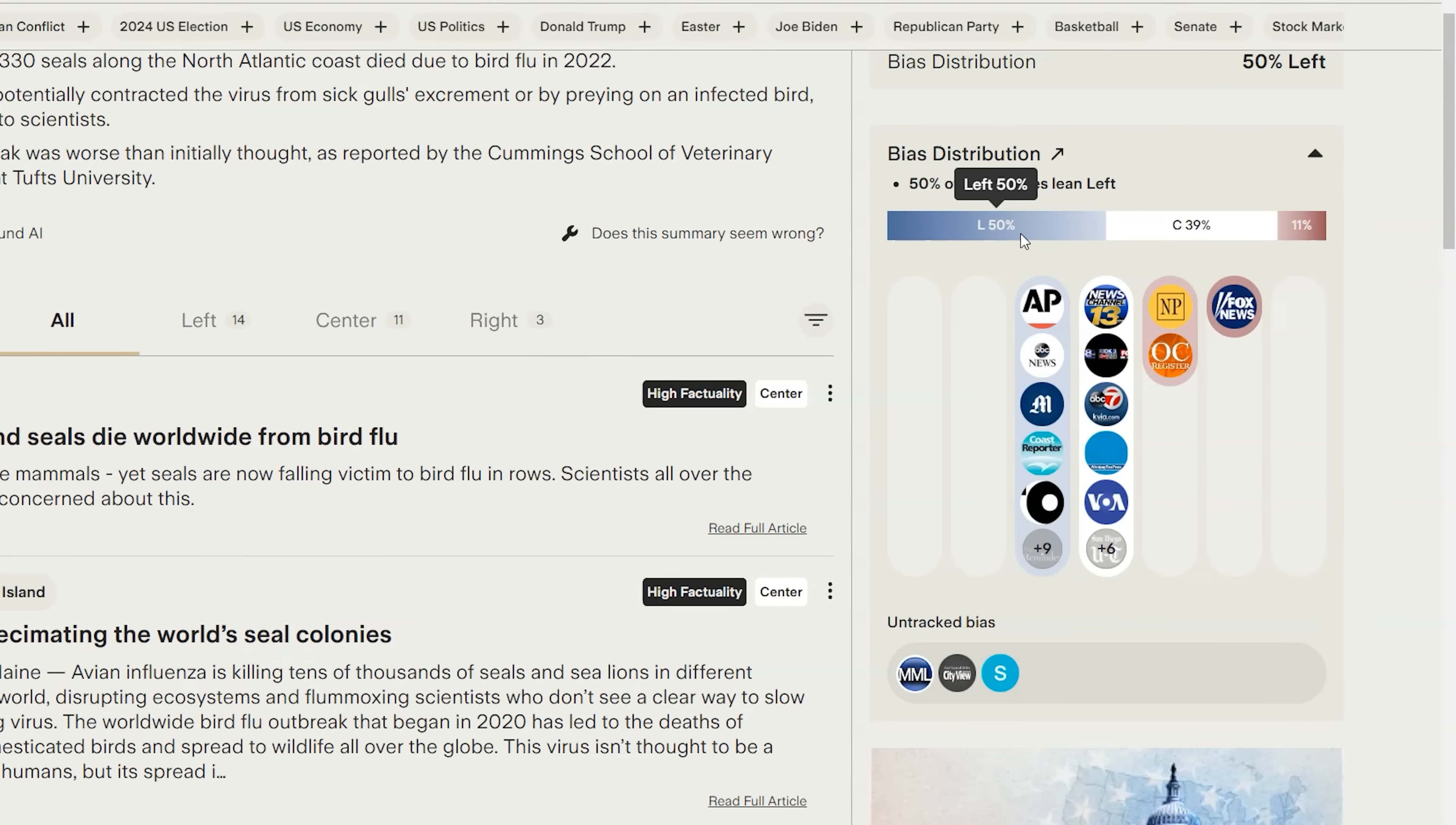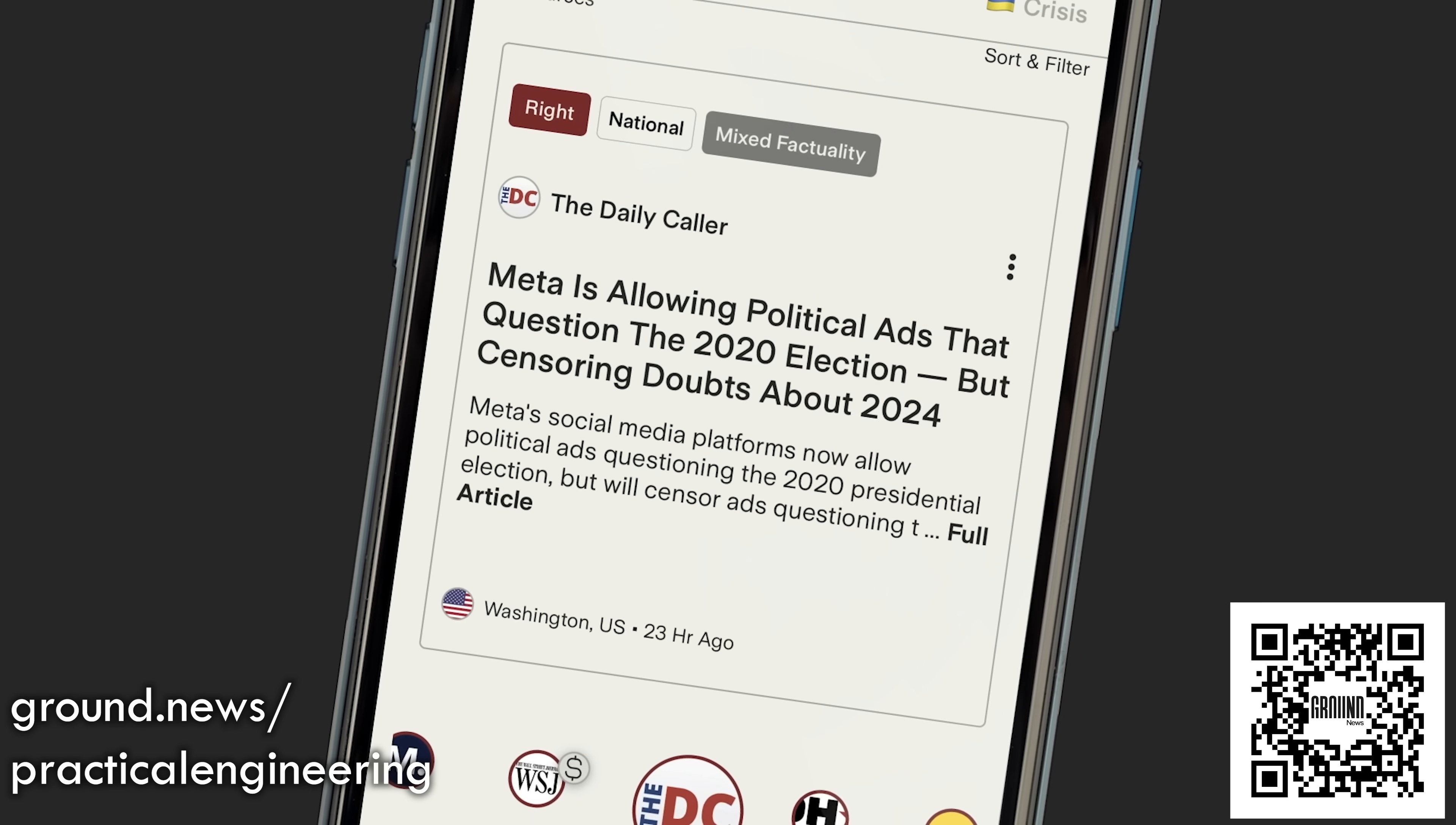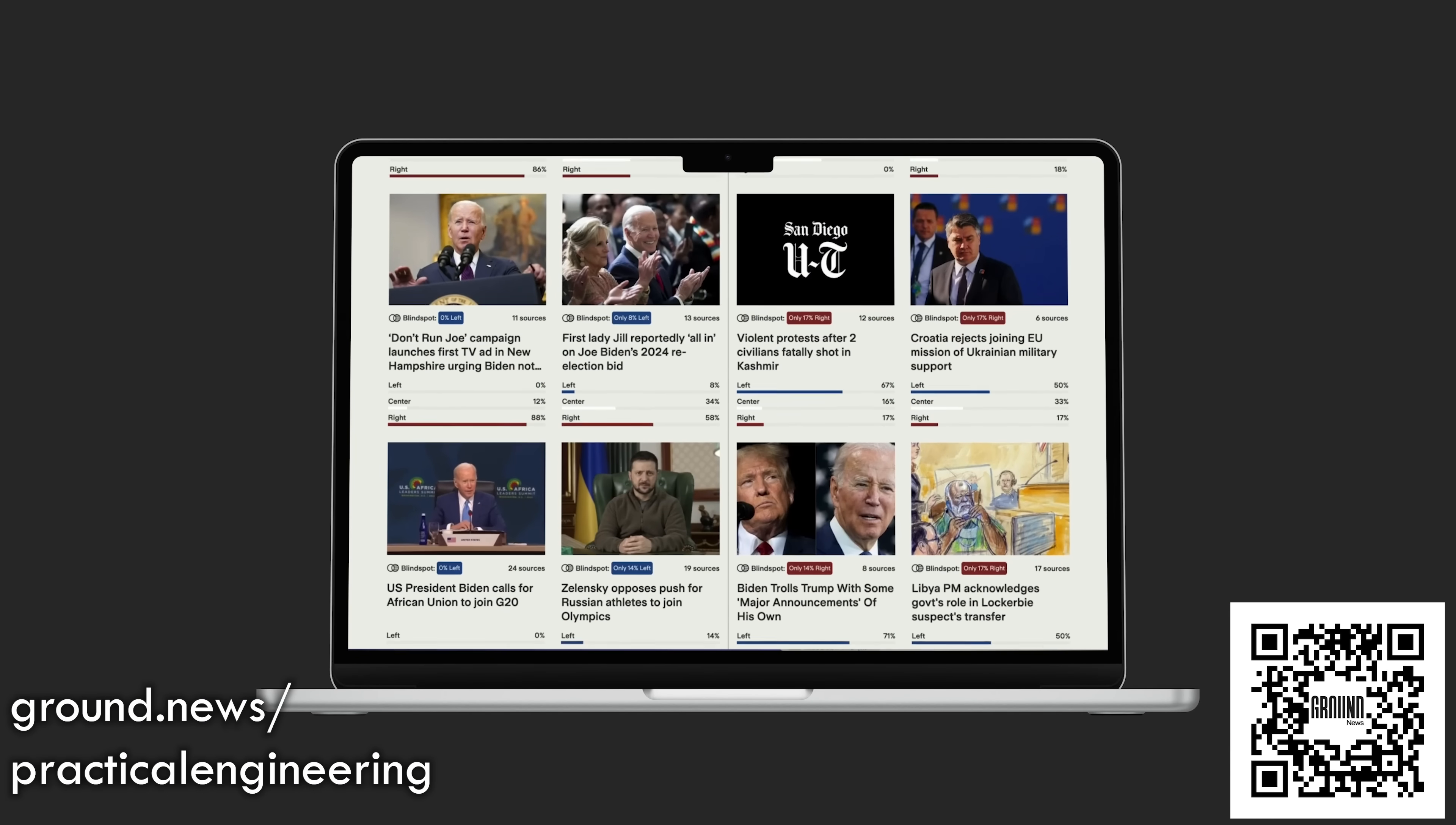50% of the outlets reporting on the story lean left, while only 11% lean right. You can also get a summary of the factuality and ownership for the story. 52% of the reporting outlets are owned by media conglomerates. Most of the reporting is pretty similar, but there's some nuance in the headlines. One right-leaning source focuses on the environmental emergency specifically in the US, while left-leaning sources mostly mention the scientists trying to stop it. This is all easy to see at a glance with today's sponsor, Ground News, a website and app that aggregates media sources and puts them in context. For every story you get a visual breakdown of political bias, factuality, and ownership of sources based on ratings from independent news monitoring organizations. One of my favorite features is the blind spot feed, which highlights stories mostly covered by only one side of the political spectrum. That's how I found the story about seals and bird flu.